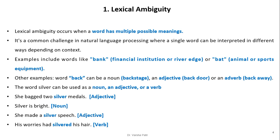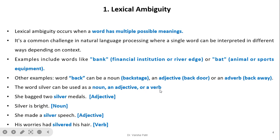Other examples include the word 'back'. It can be a noun as in 'backstage', an adjective as in 'backdoor', or an adverb as in 'back away'. So it has three parts of speech tags: noun, adjective or adverb. The word 'silver' can also be used as a noun, adjective or verb.